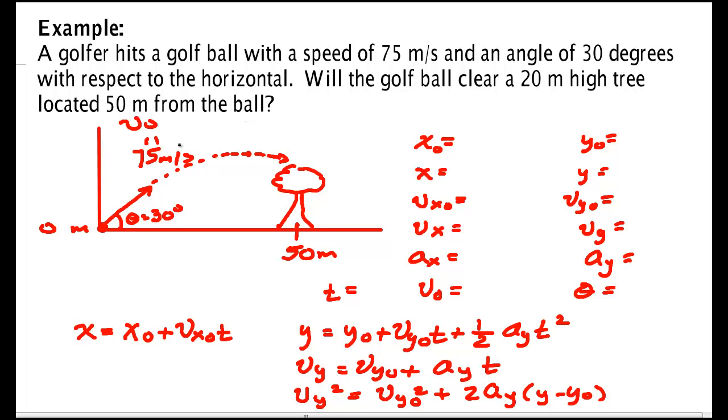Alright, so in part two of projectile motion we're going to look at an example problem. A golfer hits a golf ball with a speed of 75 meters per second.